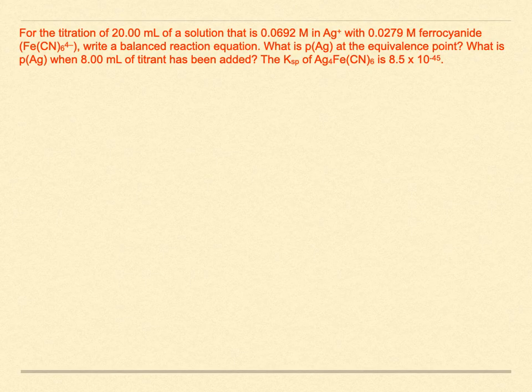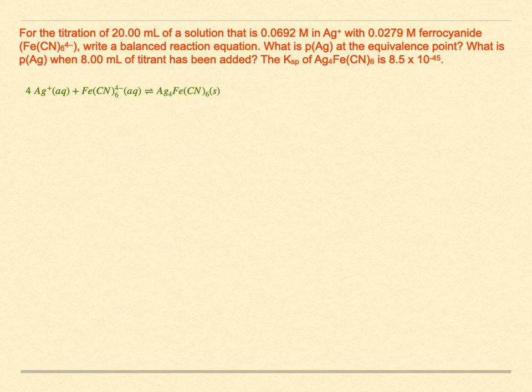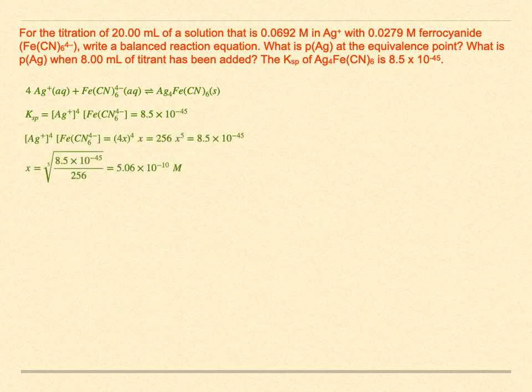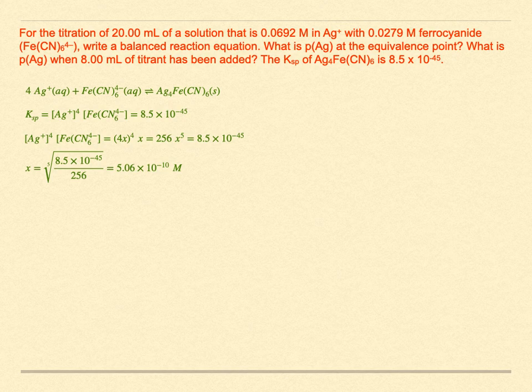The Ksp of silver ferrocyanide is 8.5 times 10 to the minus 45. Note that the precipitating species has four silver ions pairing with one ferrocyanide complex species. Here's the balanced reaction equation, and this is the solubility equilibrium expression we will use. At the equivalence point, it is as if we just added the solid precipitate to the solution, so we can solve it just like a solubility problem. Four silver ions will enter solution for each ferrocyanide complex ion. We take the fifth root to obtain 5.06 times 10 to the minus 10 molar — the system's solubility, which is the concentration of ferrocyanide. Multiplying by four gives the silver concentration: 2.02 times 10 to the minus 9 molar, and a PAg at the equivalence point of 8.694.